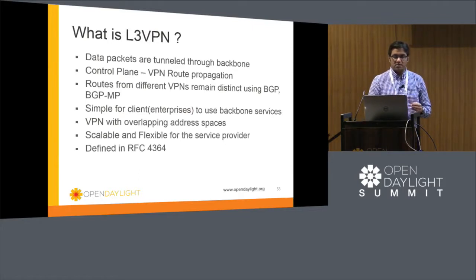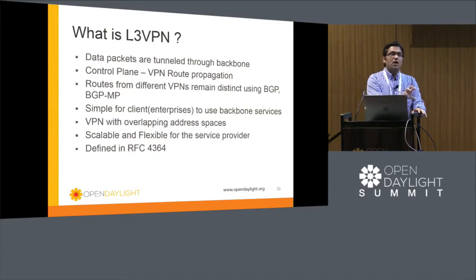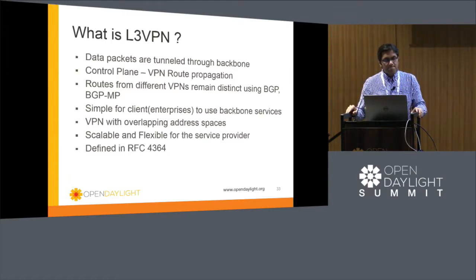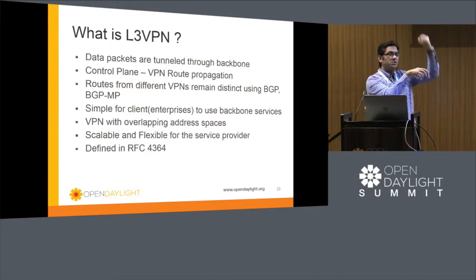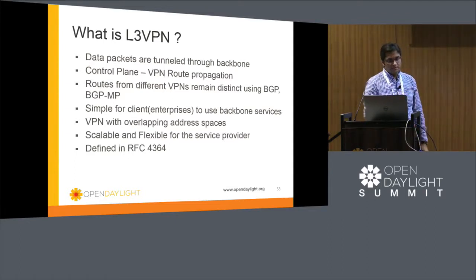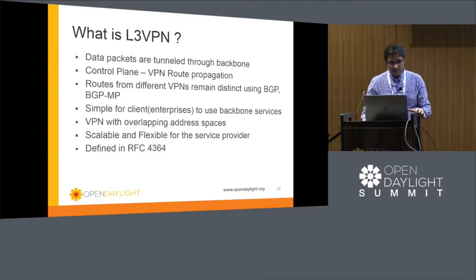L3 VPN is the second new address family in Boron. Data packets are tunneled through backbone routers in the core MPLS network, and core routers do not need to know about VPN routes — again using MPBGP. It is designed for applications running on top of the controller that want to trigger VPN or external services, using RESTCONF with Yang models to get services through routers. The brains move from the routers to the controller, providing improved scalability and flexibility.